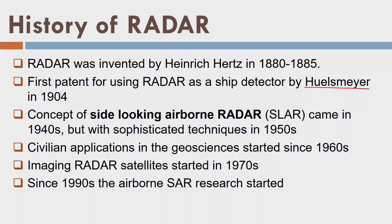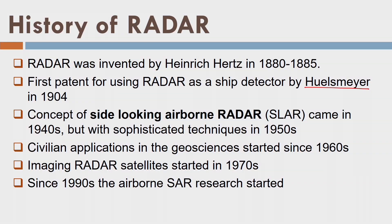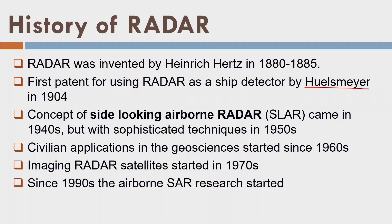The concept of side-looking airborne radar came into existence in the 1940s, and its sophisticated applications came in the 1950s. Around the 1960s, radar was used for civilian applications, for example topographic mapping. Radar was first launched on a satellite in the 1970s, and thereafter it has been widely used as a satellite mapping system. Around the 1990s, airborne radar research started. So now it is almost 100 years old technology, invented originally around 1880 — more than 100 years ago.